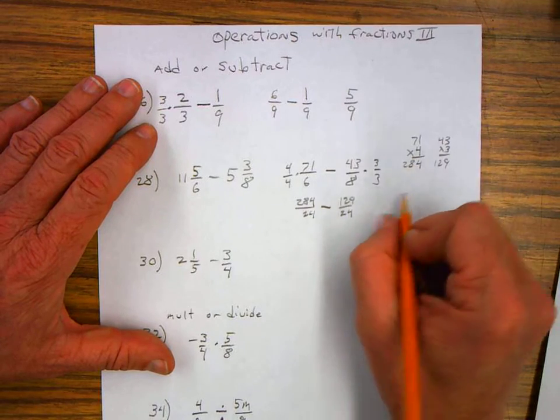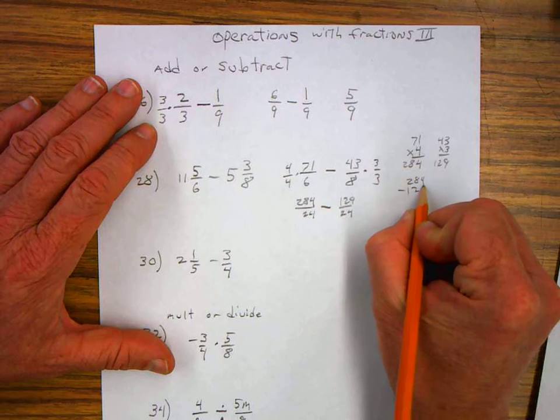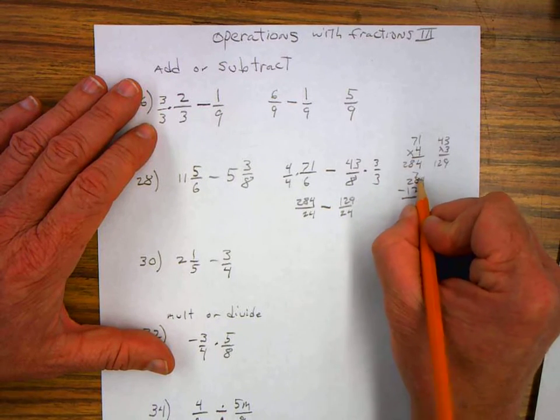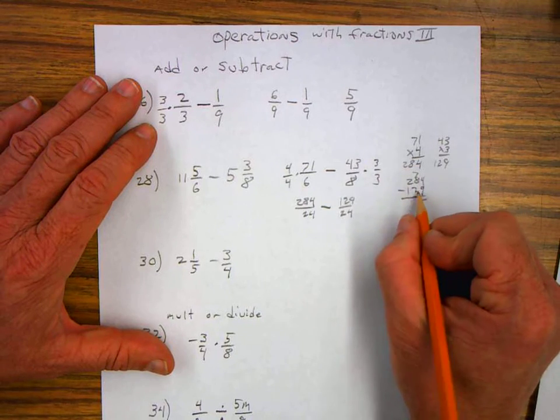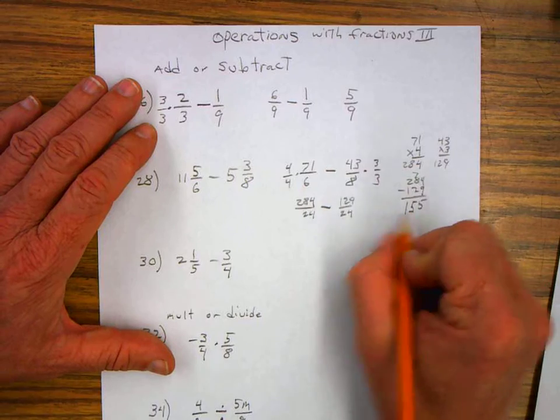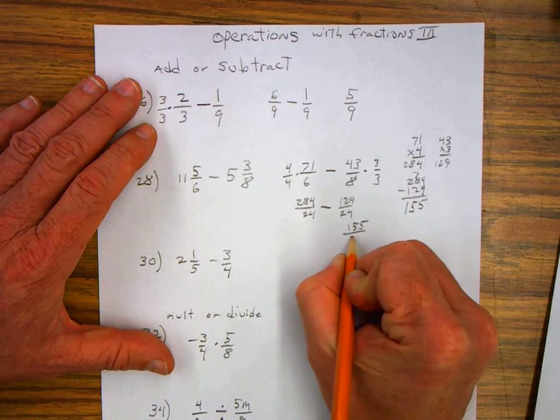Now I can do the subtraction. I have two hundred and eighty-four minus one twenty-nine. I do my subtraction. I borrow one from there and I have five. Seven minus two is five. And then two minus one is one. So this gives me one hundred and fifty-five over twenty-four.